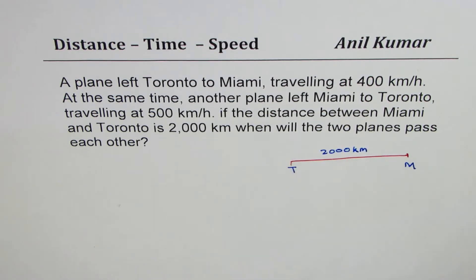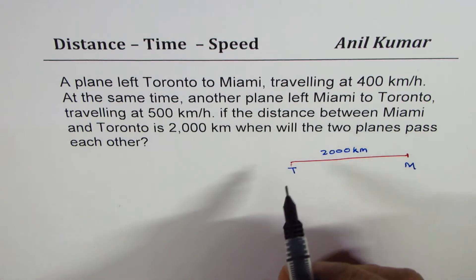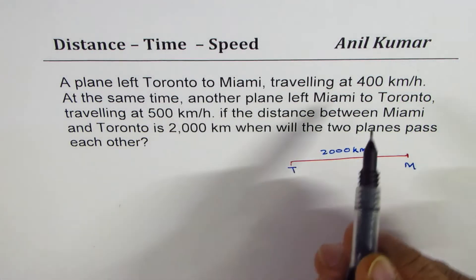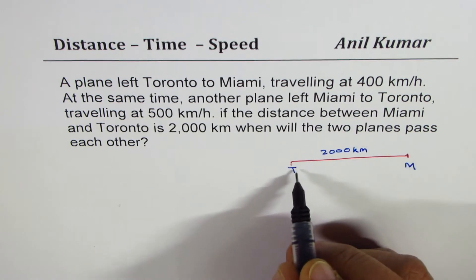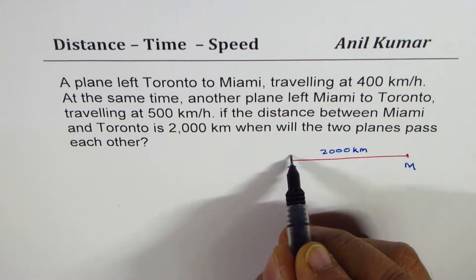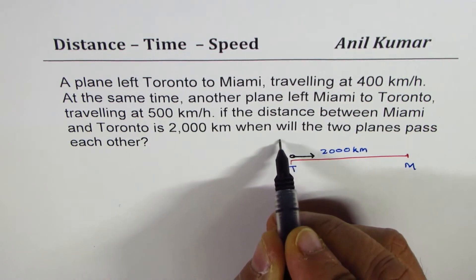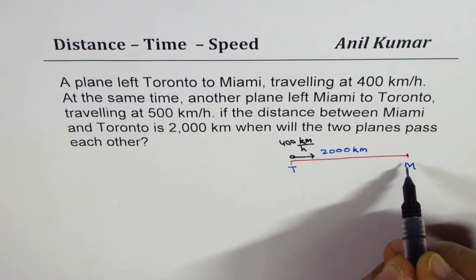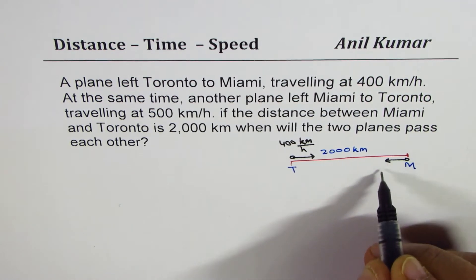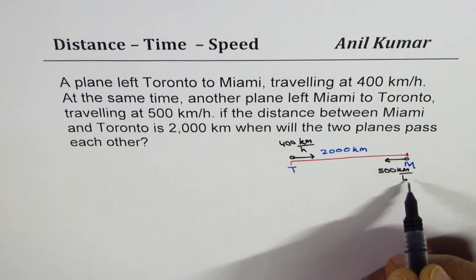Now whenever they meet, the plane which is faster will travel more distance. The plane which moves from Toronto is going at the rate of 400 km per hour, and the one from Miami is coming at 500 km per hour.